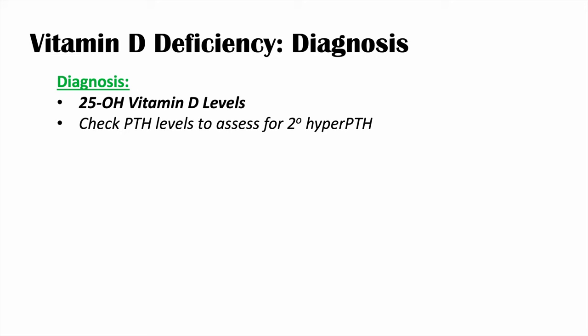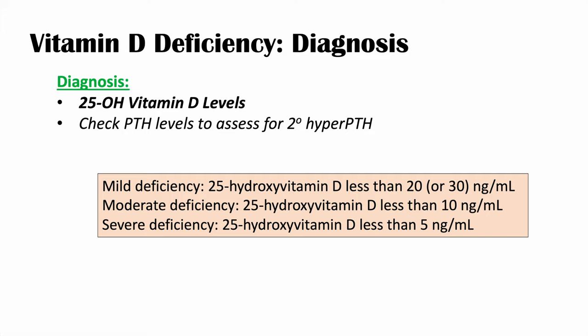Vitamin D deficiency is diagnosed by looking at 25-hydroxyvitamin D levels. Clinicians can also look at parathyroid hormone levels to assess for secondary hyperparathyroidism. Mild deficiency is defined as 25-hydroxyvitamin D levels less than 20 to 30 nanograms per milliliter (some sources say 30). Moderate deficiency is less than 10 nanograms per milliliter, and severe deficiency is less than 5 nanograms per milliliter.